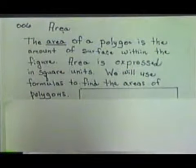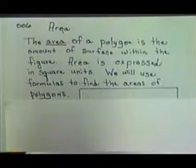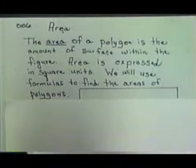We've just been working with finding the perimeter of figures. Now we're getting ready to find the area of some polygons. When you're dealing with area, you're interested in the inside of the figure. Area of a polygon is the amount of surface within the figure. Area is always expressed in square units. We will be using formulas to find the areas of polygons. But before I actually give you a lot of formulas, we're going to try to discover where the formula comes from, then we'll use the formula in finding areas.